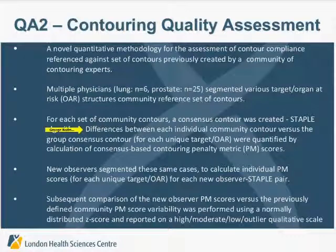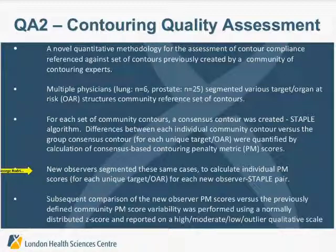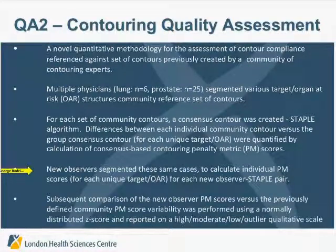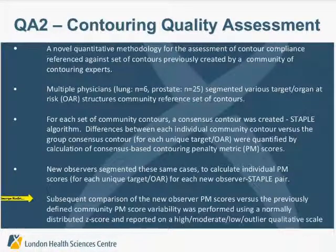This defined the community. For these cases, we had community contours and a staple contour, which defined the acceptable variation for those contouring cases. We then had new observers — not related to any of the previous community contours — contour the cases as well, calculated their penalty metric scores versus the staple, and compared that score against the community to place them on a bell curve, indicating high concordance, moderate concordance, low concordance, or most importantly, whether that contour was an outlier compared to the community.